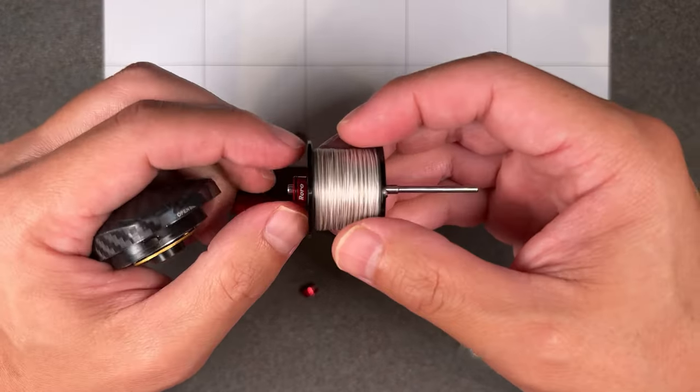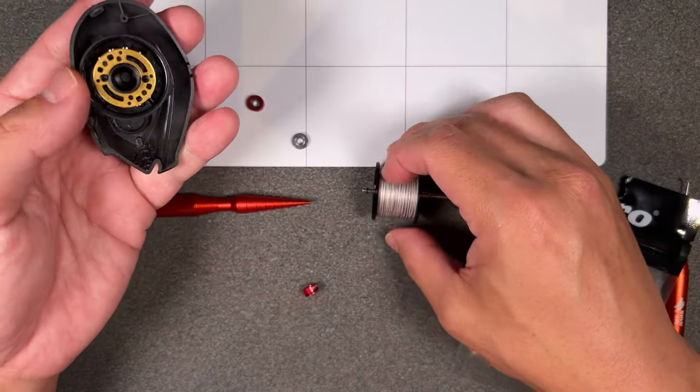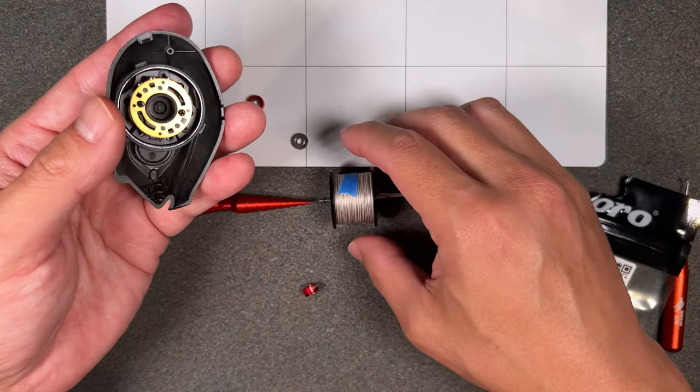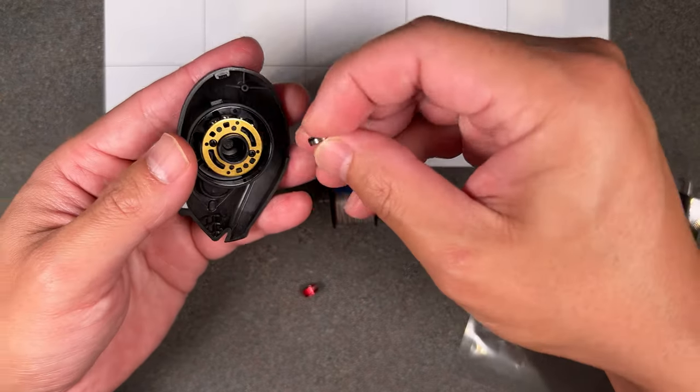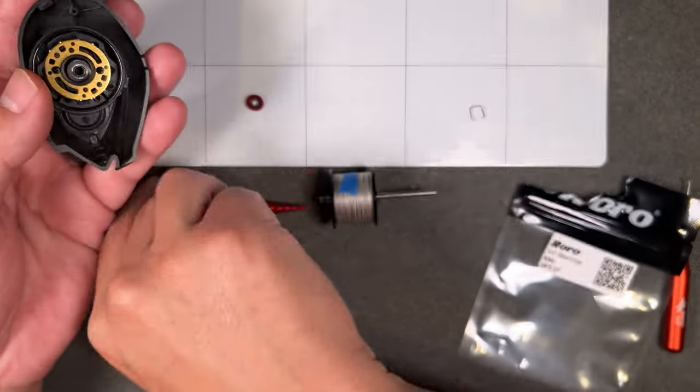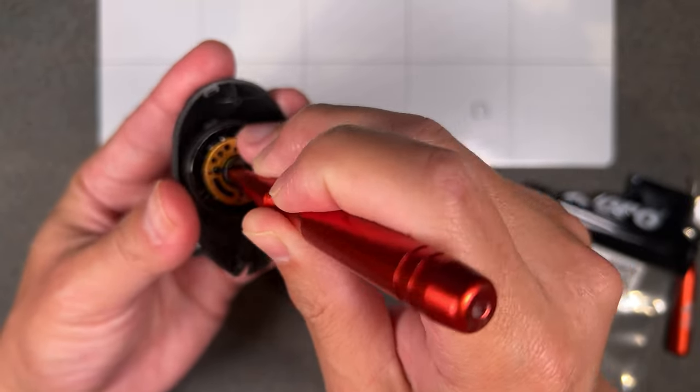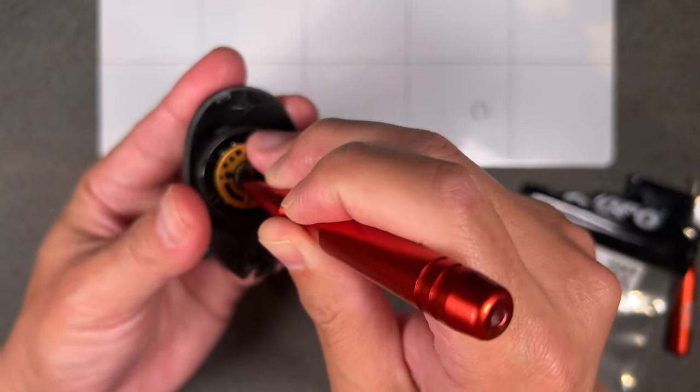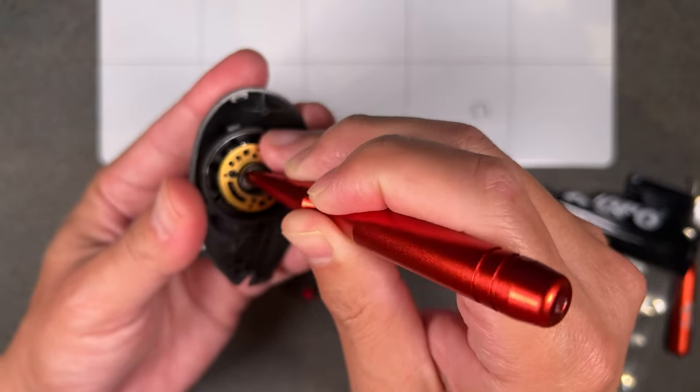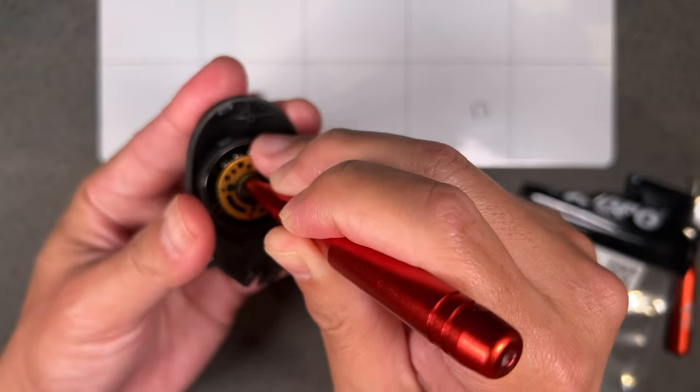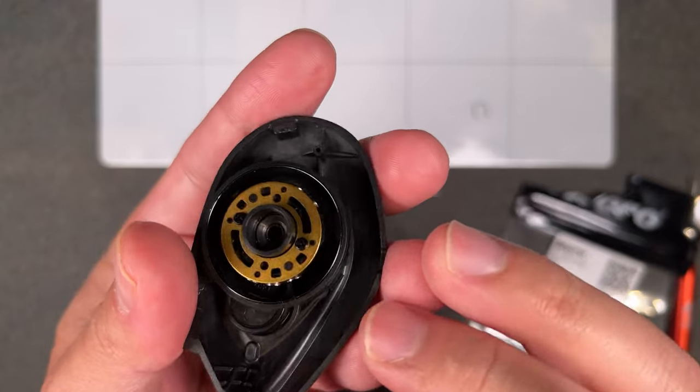And then now I'm going to go ahead and swap out the bearing back to the stock Aldebaran bearing, and I'm going to make it so that the O-ring goes down. But yeah, as I'm trying to seat this bearing, the tolerances are a lot tighter.